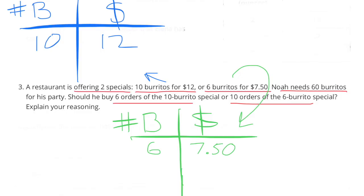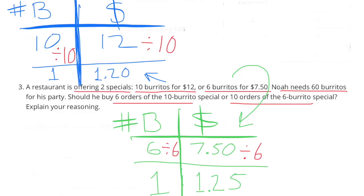On the top in blue, I made a table for 10 burritos for $12. 10 divided by 10 equals 1, so that would represent 1 burrito. 12 divided by 10 would be $1.20. So the unit price per burrito would be 1 burrito for $1.20 for the first special.